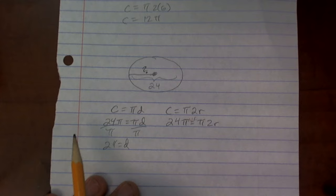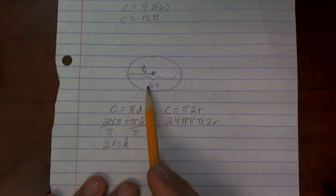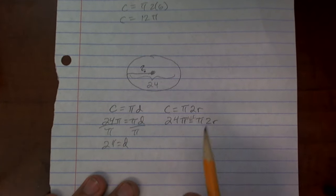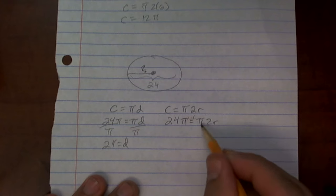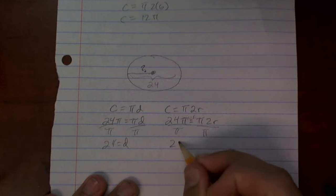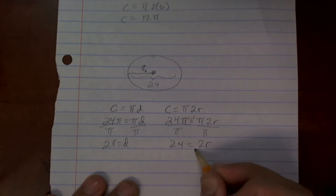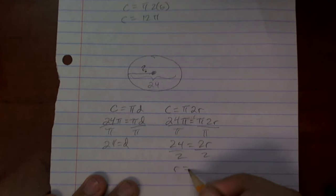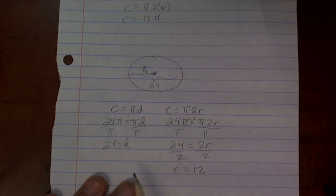But they're asking us for what is the radius, right? Well, half of the radius is going to be 12. However, if I use this formula, you do the same thing. Divide by pi. So you get 24 equals 2r, divide by 2, and r would equal 12, which is the same part.